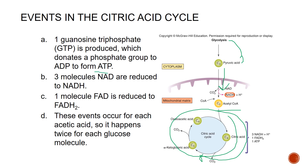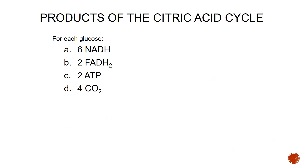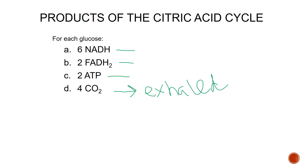We also have three molecules of NAD that are reduced to NADH plus hydrogen, and one molecule of FAD that is reduced to FADH2. These events occur for each acetic acid molecule, so it happens twice for each glucose molecule. Tallying all this up, we have six NADHs, two FADH2, two ATP, and four molecules of carbon dioxide, which will be carried by the blood and exhaled via our respiratory system.